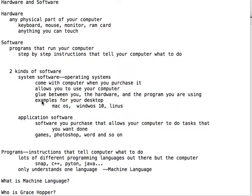Examples of system software would be Mac OS. These are all different examples of your system software that are out there for your desktops.